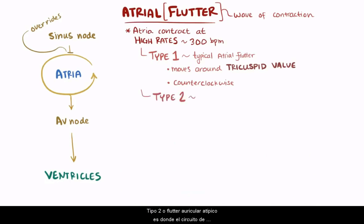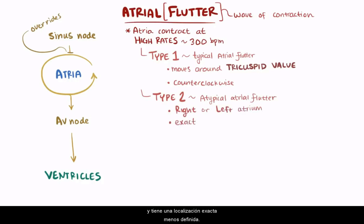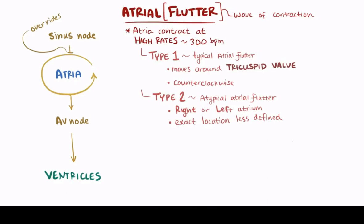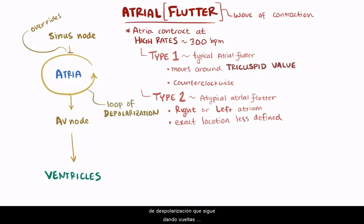Type 2, or atypical atrial flutter, is where a reentrant circuit develops in either the right or the left atrium, but the exact location is less clearly defined. Again, we've got a similar setup where a wave of activated tissue, or depolarization, hits tissue in such a way that it creates a loop of depolarization that keeps going around and around.